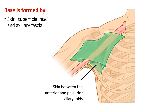The base is directed downwards and is formed by the skin, superficial fascia, and axillary fascia. This base extends between the anterior axillary fold — formed by the skin around the lower border of pectoralis major — and the posterior axillary fold, which is formed by the latissimus dorsi muscle on the dorsum of the trunk.